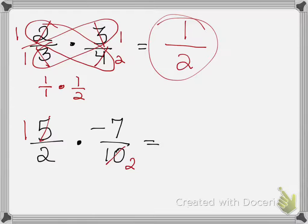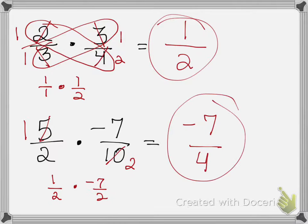Is there a number that can divide into 2 and negative 7? Nope! So we'll leave them the way they are. So now we're multiplying 1 half times negative 7 over 2. And we'll multiply our numerators together to get negative 7, and 2 times 2, which is 4.